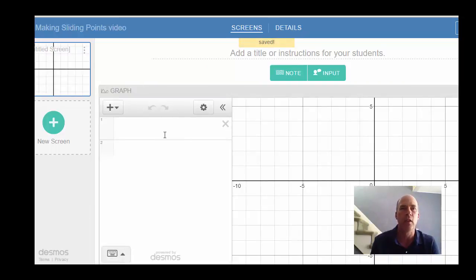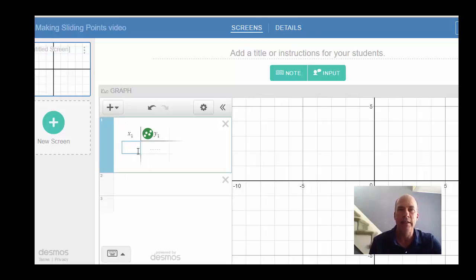And the best way to do this is by using a table. So I'm going to use the plus sign to make a table. And let's say I'm going to put a point at negative 5, 1. So it's just added away there. So I have this point.